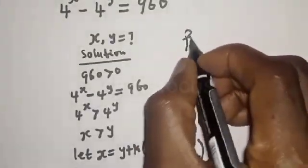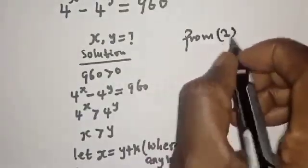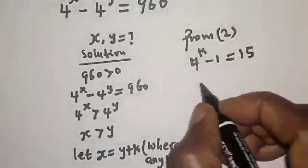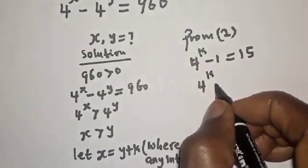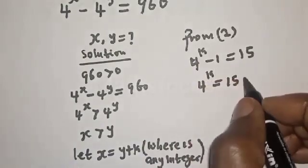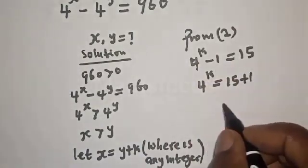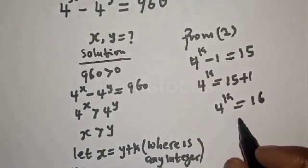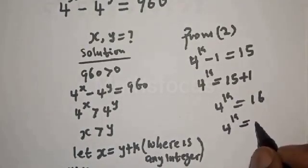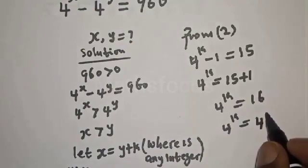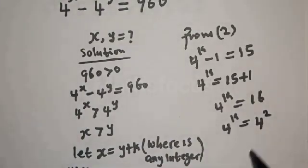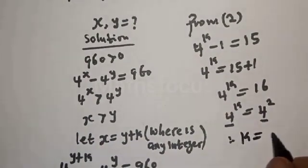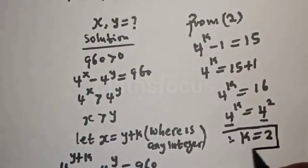From equation 2: 4 raised to power k minus 1 equals 15. Moving the 1 to the other side, 4 raised to power k equals 16. Since 16 is 4 squared and we have the same base 4, therefore k is equal to 2. This is the value of k.